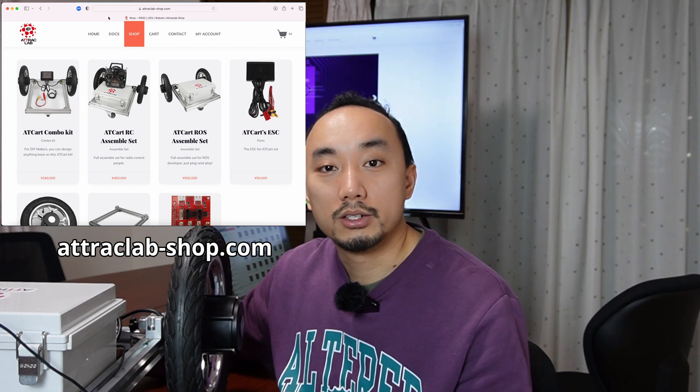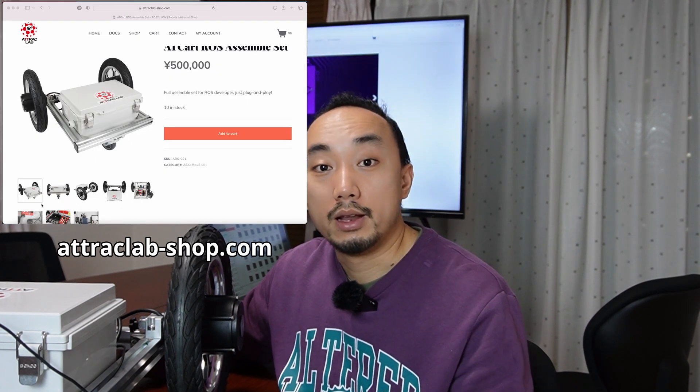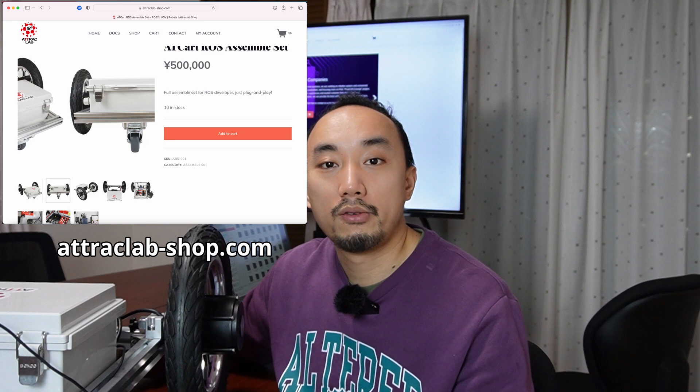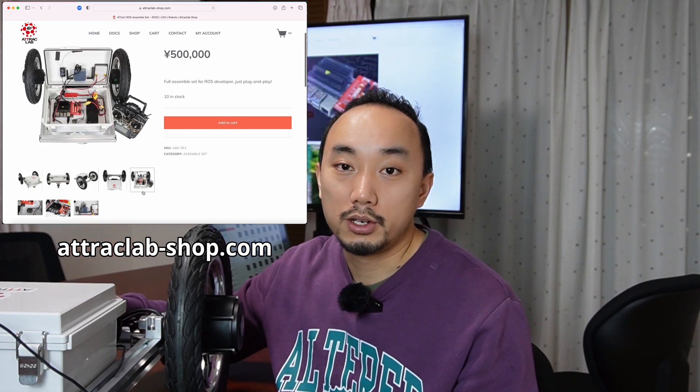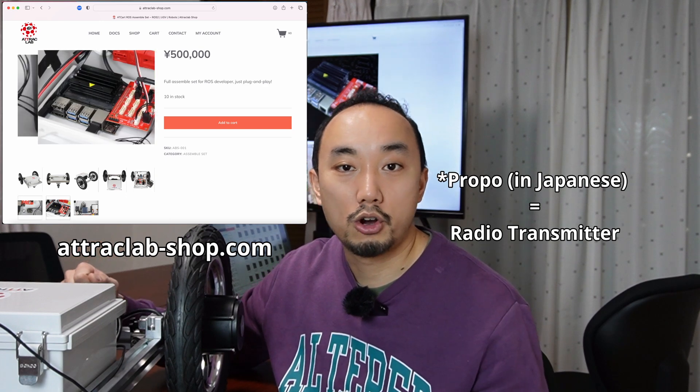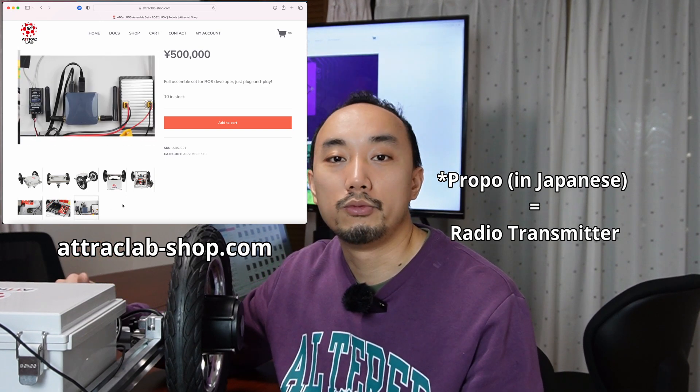There are also some spare parts like the JMO app, the frame, and the combo kit which you can assemble everything from scratch. But I really recommend the ROS assemble set because you just plug in the battery, turn on the controller and you can move the robot right away. If you like this kind of video, please press like and share button. That will help me a lot. Thank you for watching and see you soon.